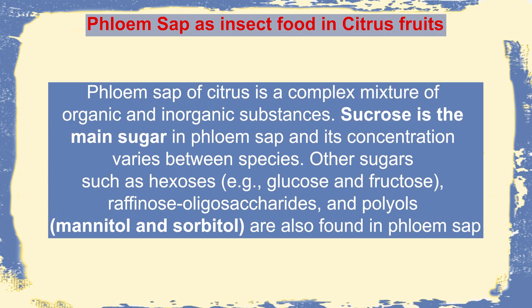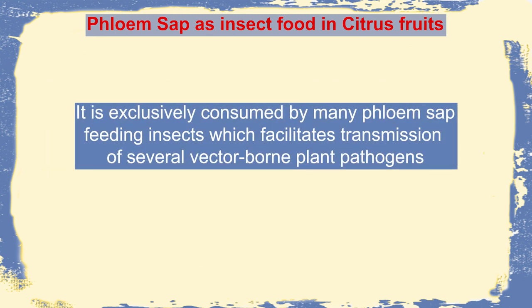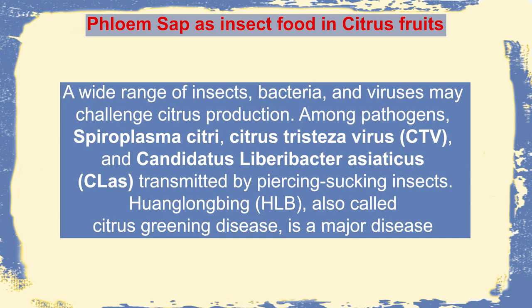In citrus fruits like orange and pears, sucrose is the main sugar, and apart from sugar there may be raffinose or polyols like mannitol and sorbitol. This particular phloem protein and phloem sugar attract different insects. When these insects feed on the phloem sap, there will be infection of certain pathogens including citrus tristeza virus, spiroplasma infection, or candidatus infection, which are basically transmitted through these insects.